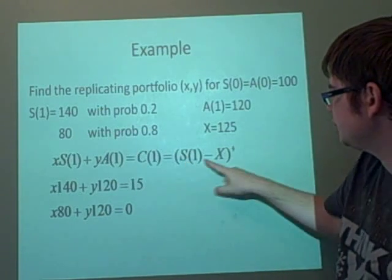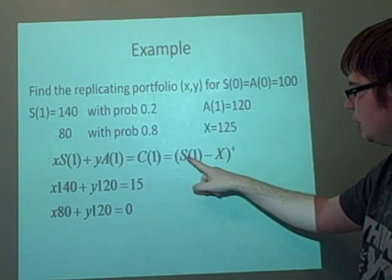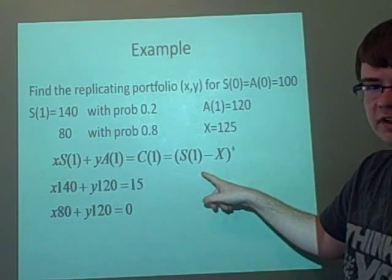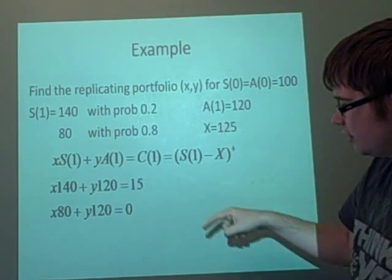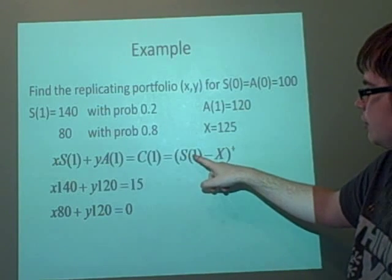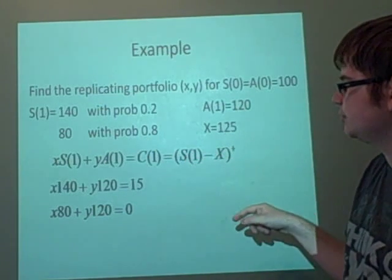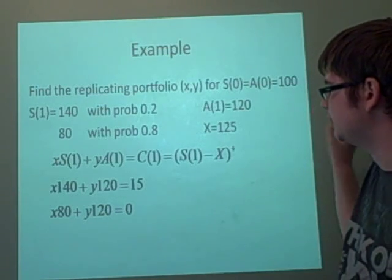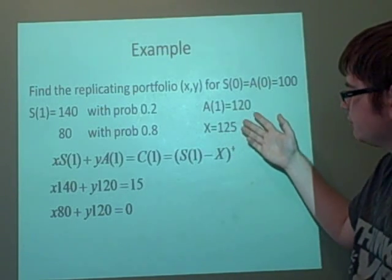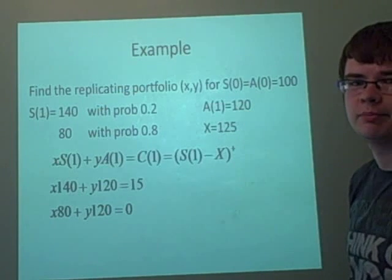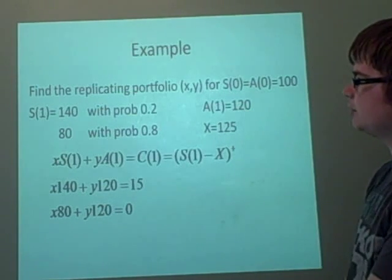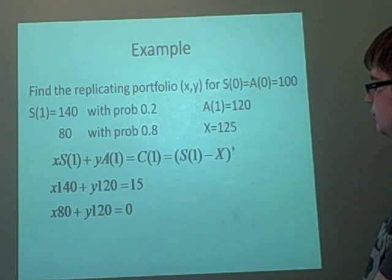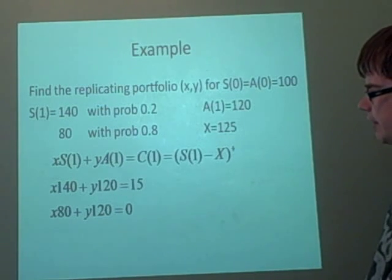So we've got S(1) here. It's the stock, it's gone to 140. The strike price is 125. 140 minus 125 is 15, which is positive, so we take it. Down here we've got the stock which is 80 minus 125, which is minus 45, which is negative, so we don't take it. So we don't have to agree to buying it. Whereas with a forward contract, we have already agreed to do it. But call options are better.